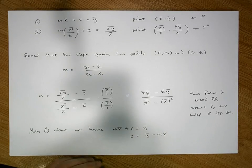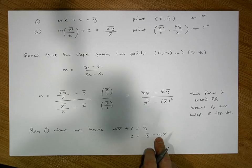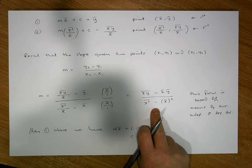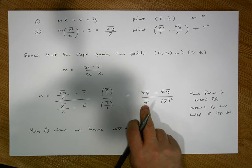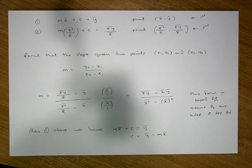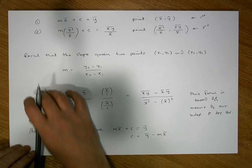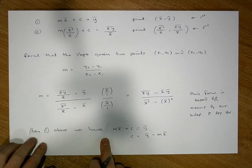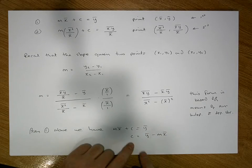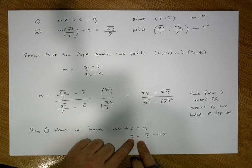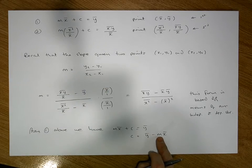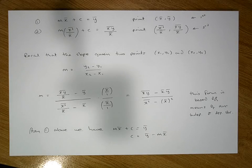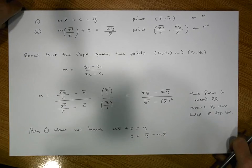So to summarize: we calculate the slope using m = (x̄ȳ − x̄·ȳ) / (x²̄ − x̄²), which requires the average of x, the average of y, the average of x², and the average of xy. Then the y-intercept is c = ȳ − mx̄, the average of y minus the slope times the average of x.